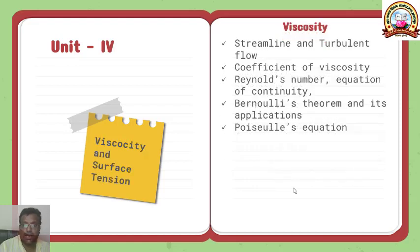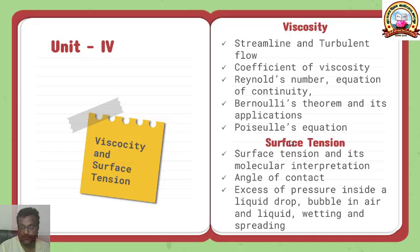The last unit of the same paper is divided into two portions: viscosity and surface tension. In viscosity, the unit starts with streamlined and turbulent flow, coefficient of viscosity, then basic concept of Reynolds number and equation of continuity, later Bernoulli's theorem and its application. At the end of this topic is Poiseuille's equation. The last portion of this unit consists of surface tension. This topic starts with surface tension and its molecular interpretation, then angle of contact, excess of pressure inside a liquid drop or bubble in air or liquid, and wetting and spreading phenomena. This is about your second paper.